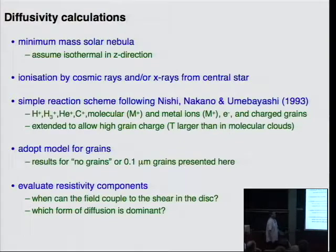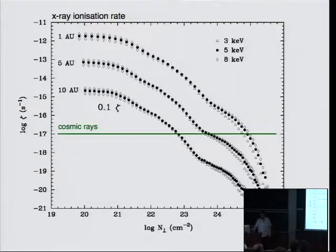With a simple reaction scheme that simplifies the chemistry and boils it down to its essence, but does include things like grain charging and so on, if you assume some kind of size distribution for the grains. And evaluate the components and see where things grow. So here's the x-ray ionization rate just taken from IGEA and Glassgold compared to the canonical cosmic ray ionization rate. So this is pick your radius from the star, start at the surface of the disk, you've got high ionization rate, go in and some of the x-rays are attenuated and eventually cosmic rays dominate if you go deep enough into the disk.